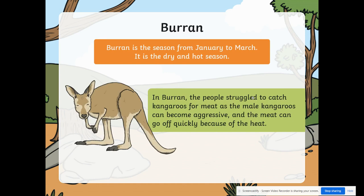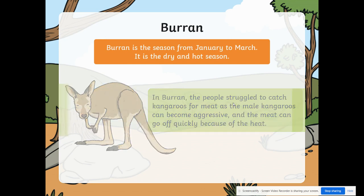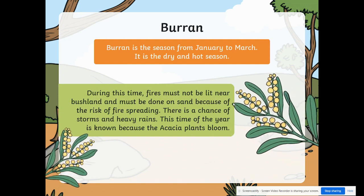In Baran, the people struggle to catch kangaroos for meat as the male kangaroos can become aggressive and the meat can go off quickly because of the heat. During this time, fires must not be lit near bushland and must be done on sand because of the risk of fire spreading. There is a chance of storms and heavy rains. This time of year is known because the acacia plant blooms — you might know it as wattle.